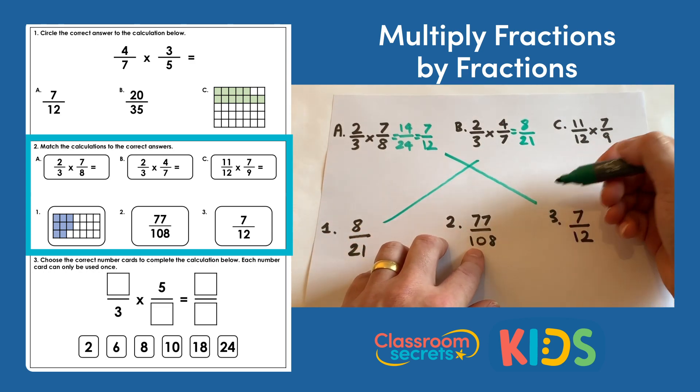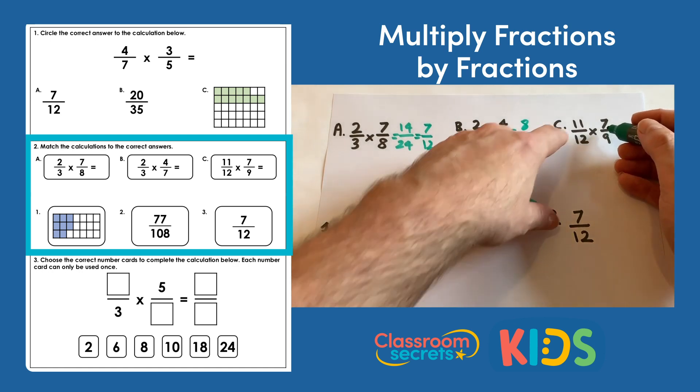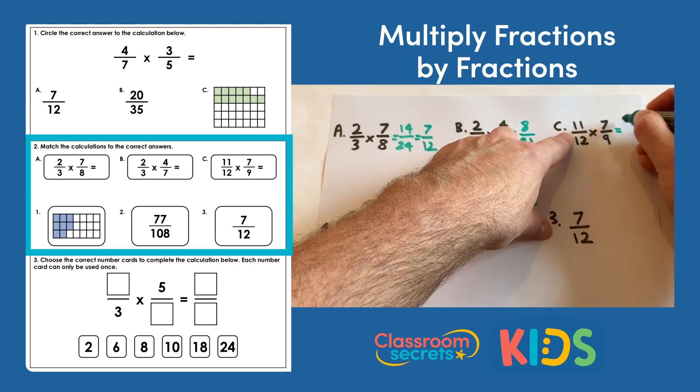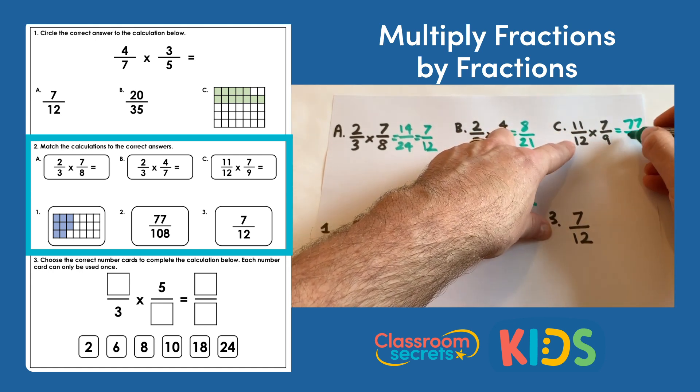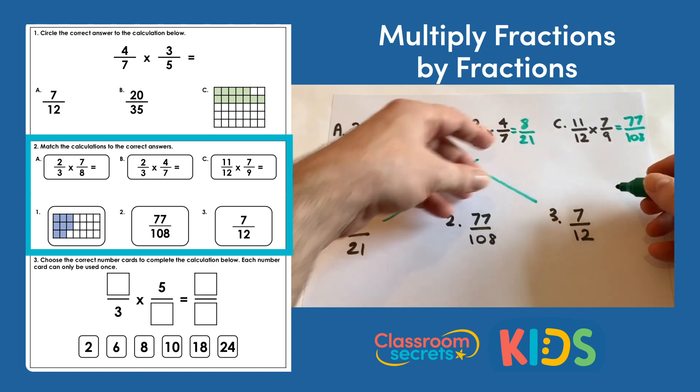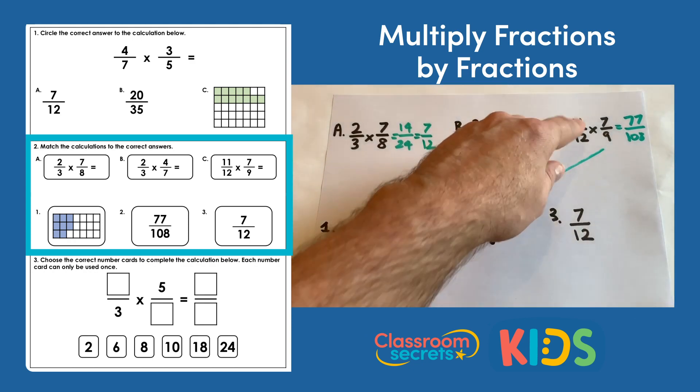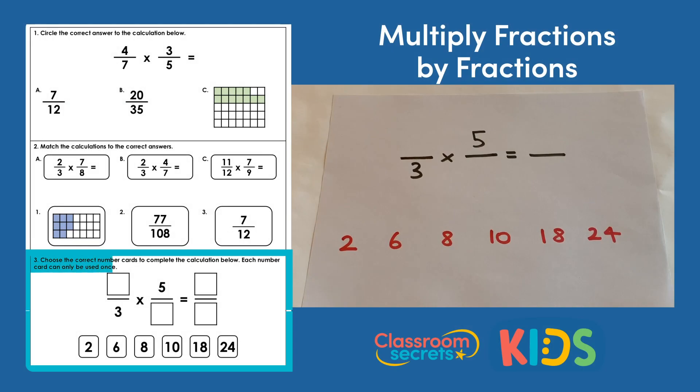So C should match up to answer two. Let's just try it out though: 11 times 7 is 77, 12 times 9 is 108, and that does match up. So C matches up to two.